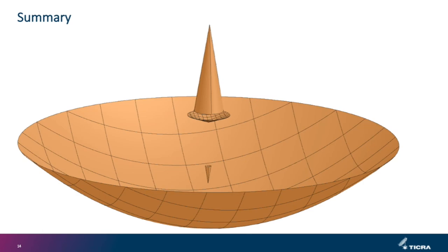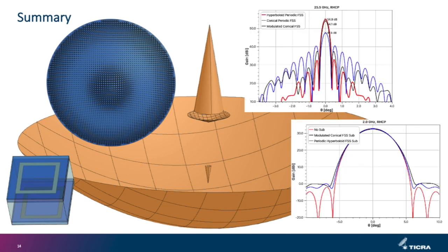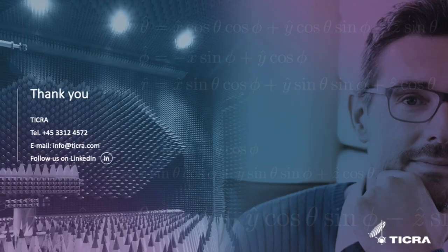In conclusion, we considered the S-KA band Cassegrain dual reflector with an FSS subreflector. To simplify the manufacturing process, the subreflector has a cone shape instead of a hyperboloid, which gives degraded antenna performance due to non-optimal illumination of the main reflector. By using a modulated FSS subreflector with varying-size FSS elements, we can compensate for the non-optimal illumination and achieve antenna performance close to the ideal hyperboloid case, but with a simpler manufacturing process. In this presentation, we only considered goals on the peak gain, but one could easily include other specifications such as sidelobe level, cross-polar levels, or any other requirements. Thank you for your attention.